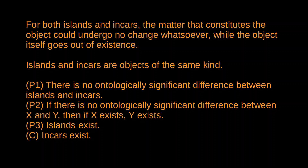So one way to put this argument: there is no ontologically significant difference between islands and in-cars. If there is no ontologically significant difference, then if islands exist, in-cars exist. Islands exist, so in-cars exist. Or we could go the other way: if in-cars do not exist, islands do not exist; in-cars do not exist; so islands do not exist. It seems that there's not some significant or relevant difference between ordinary objects and these strange or exotic objects that we don't usually think of the world as containing.